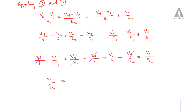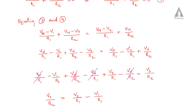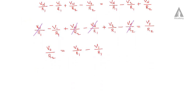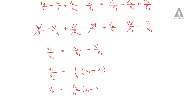Simplifying, the Vn terms cancel and we get: V2 by R1 minus V1 by R1 equals V0 by R2. So we can write V0 by R2 equals 1 by R1 into V2 minus V1. Therefore, V0 is equal to R2 by R1 into V2 minus V1. This is the equation for V0.